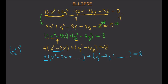So you add 1 inside the x parenthesis. This is where you have to be very careful — since you added 1 inside a group that has a factor of 4 outside, you don't add 1 to the right side. Instead, multiply 4 times 1, giving 4, and add 4 to the right side. For the y-group, take negative 4 divided by 2 squared: negative 4 over 2 is negative 2, squared is positive 4, so add 4 inside the y parenthesis. Since the coefficient outside is 1, you add 1 times 4 equals 4 to the right side as well.